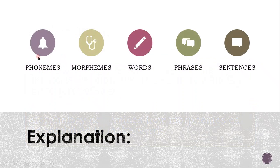Phonemes are the most fundamental thing in a language. Those build to create morphemes, which are the smallest unit of language. The morphemes build together to create words, and then these couple together to make phrases, and then you have sentences.